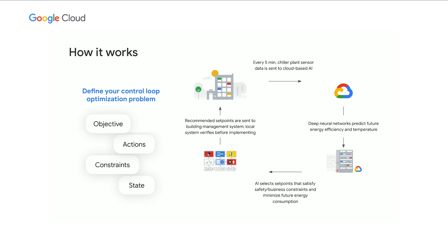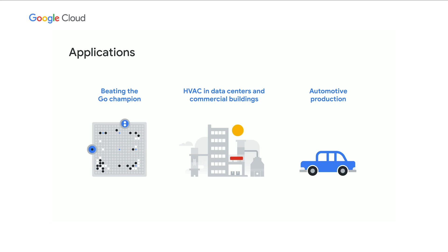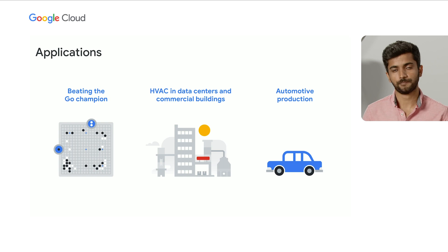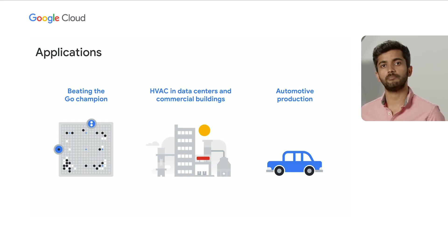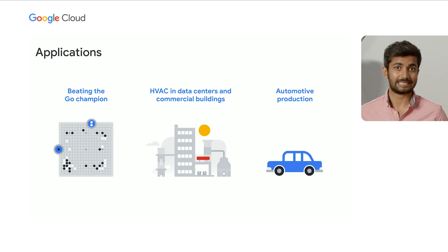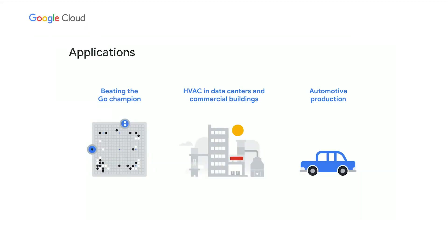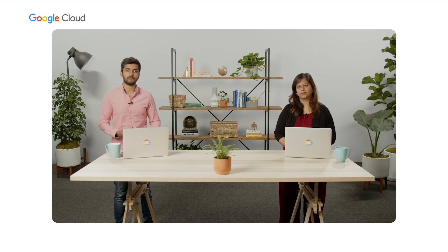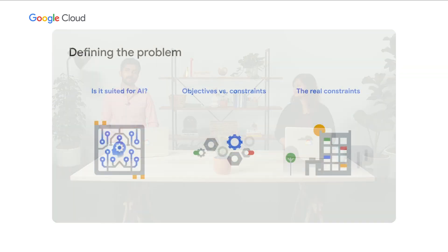So where have we been using this technology? 25 years ago, AI beat the world champions at chess, and the next big milestone was beating the world champions at Go — a few years ago, DeepMind achieved this milestone. Next, we applied this technology to a real business problem in our Google data centers: the high energy costs used to cool them. After seeing sustained and consistent savings, we made this technology available to external partners in a limited capacity to apply in their data centers and commercial buildings. And recently, we've been starting to explore applying this technology to the paint shop in the automotive production line, which is one of the most energy-intensive steps in the production of a car.